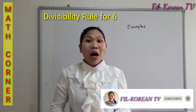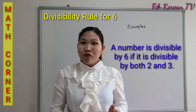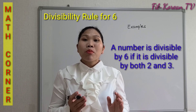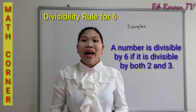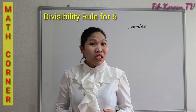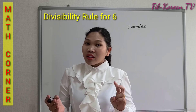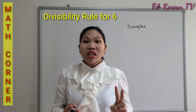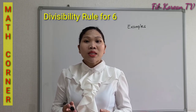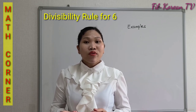A number is divisible by 6 if it is divisible by both 2 and 3. You still remember the rules for 2 and 3 — even numbers are divisible by 2.